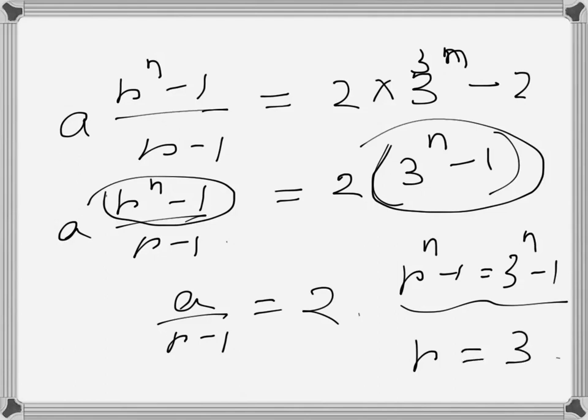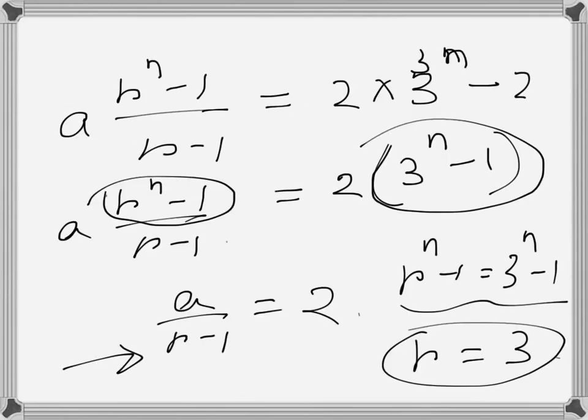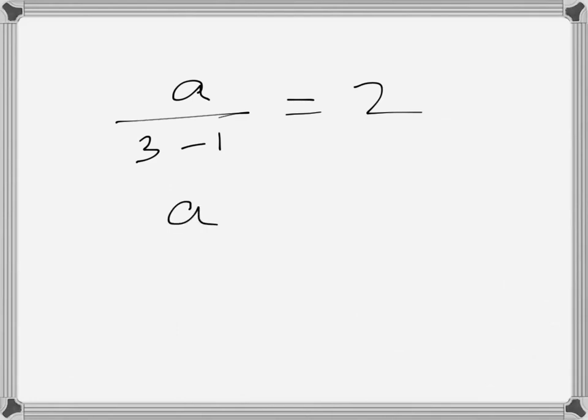Once we have r is equal to 3, we plug in that value of r here. So it becomes a over 3 minus 1 is equal to 2, so a over 2 equals 2. Therefore a is equal to 4 and r is equal to 3.